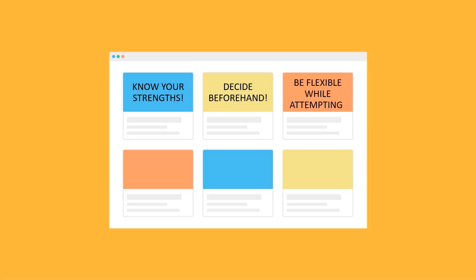However, be flexible about it while attempting. In my personal scenario, I had planned to do the Physics, Chemistry, and Mathematics sections of the SPASSE entry test. However, during the exam, I found the Biology section much easier, even though it had more questions. And therefore, instead of attempting Physics, I attempted Biology. This is why, although it is essential to have a plan, you should be flexible about it during the exam in order to turn things in your favour.